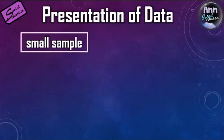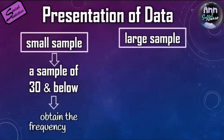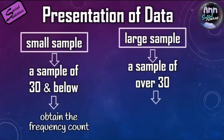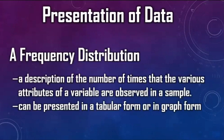In presenting the data, it can be done for both a small and large sample. The small sample will be those that are 30 and below, wherein you can obtain the frequency count. For the large sample, it's over 30 cases and you can obtain both the frequency and the percentage. A frequency distribution is a description of the number of times that the various attributes of a variable are observed in a sample — like how many times you observed the age 20, or how many times you observed the sex female among all included cases. It can be presented in a tabular form or in graph form.